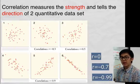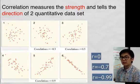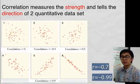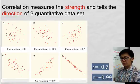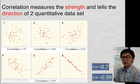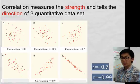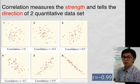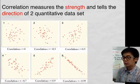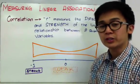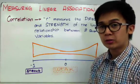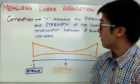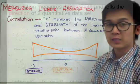For the two remaining R values — negative 0.7 and negative 0.99 — we would say that scatter plot 6 matches negative 0.99, which is really strong and negative, and R of negative 0.7 will be our fourth scatter plot. That is how we estimate the value of R so that we will have a better understanding of the numerical values for finding the direction and strength of the relationship between two quantitative data sets.